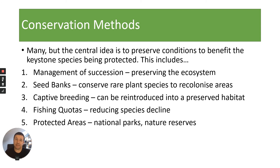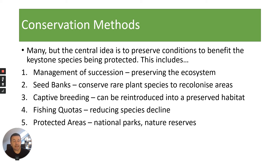Okay, so conservation methods. In the spec they do mention certain methods, but there are many conservation methods and the key thing is that you will be given information. The first one is management of succession — for example, you might want to limit succession in certain habitats to stop the destruction of grasslands or heathlands. Secondly, you could have seed banks to conserve rare plant species. Seed banks around the world collect species — even common ones — and store them in vaults underground so that if they become extinct we'll be able to recolonise certain areas in the future.